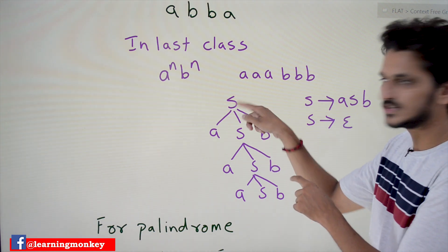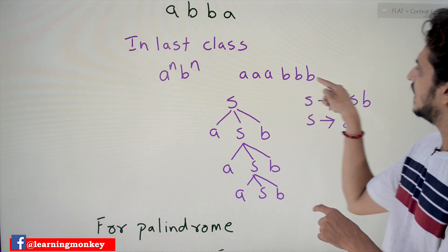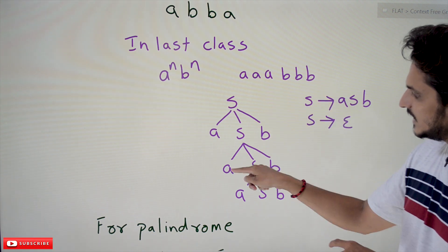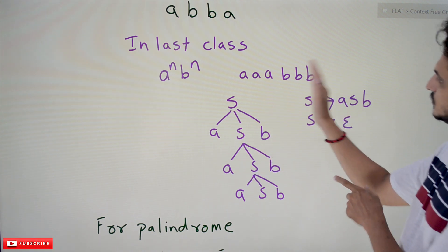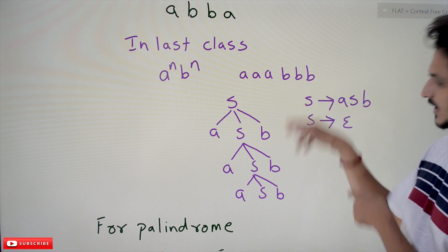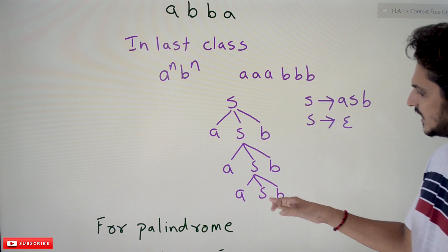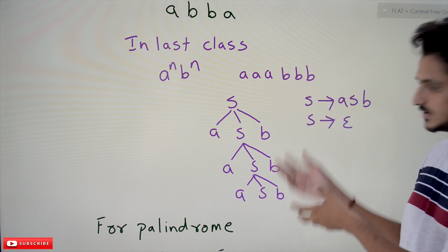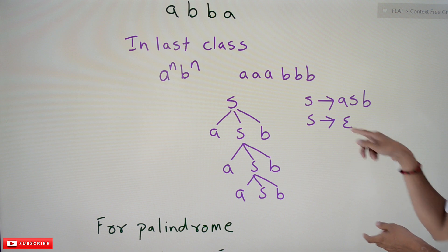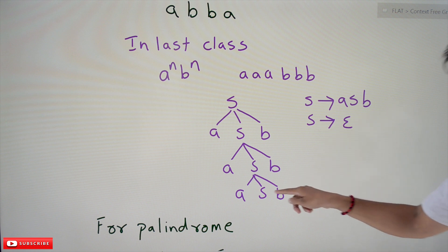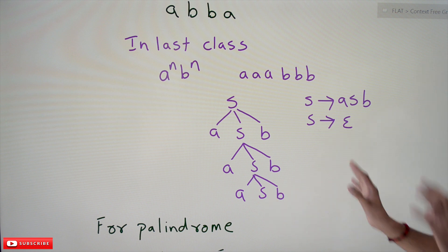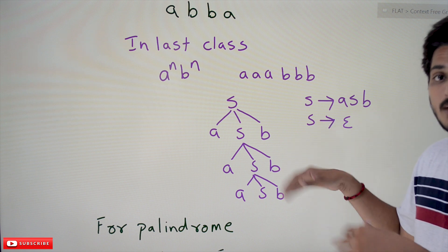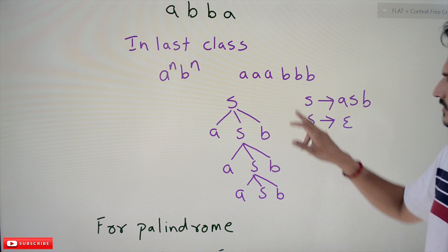The first S checks for the first A and last B. The second S checks for the second A and second-to-last B. The third S checks the third A and third-to-last B. That is how it executes. You can stop using epsilon — S can take epsilon and stop. This is the logic from our previous class, and a similar logic will apply to palindrome as well.